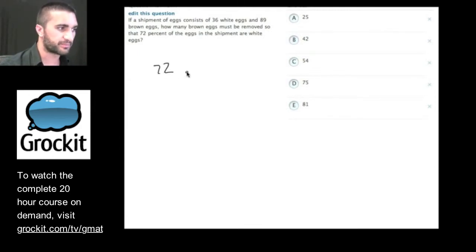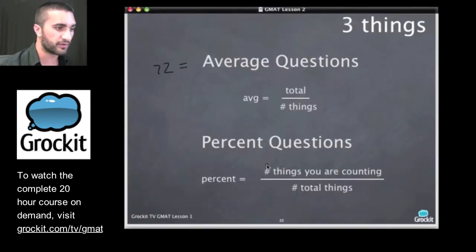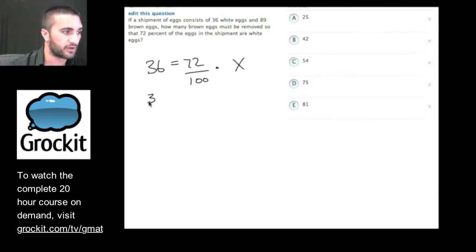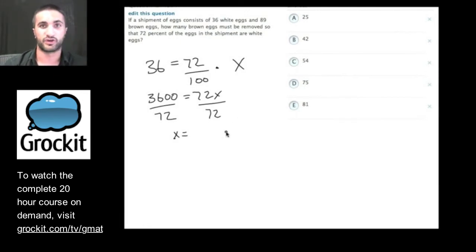Let's replace what we know. We know that 72 is the percent. We know that the number of things that we're counting is 36, and we want to figure out how many things there are. We can reword it this way, from English to math: 36 is 72% of what number? So let's multiply. We get 3600 equals 72x. We divide both sides by 72. We get x equals...